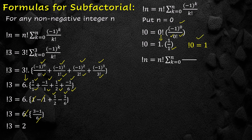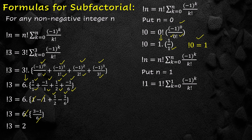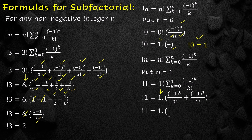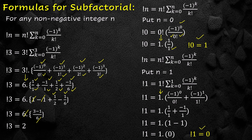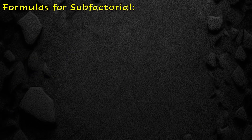Now we find the sub-factorial of 1. We write the formula and put n equal to 1. Sub-factorial of 1 is equal to 1 factorial into summation k from 0 to 1 of minus 1 raised to power k over k factorial. Expanding: 1 factorial into (minus 1 raised to power 0 over 0 factorial plus minus 1 raised to power 1 over 1 factorial). After simplification, sub-factorial of 1 equals 1 into (1 minus 1) equals 0. Therefore sub-factorial of 1 is 0.